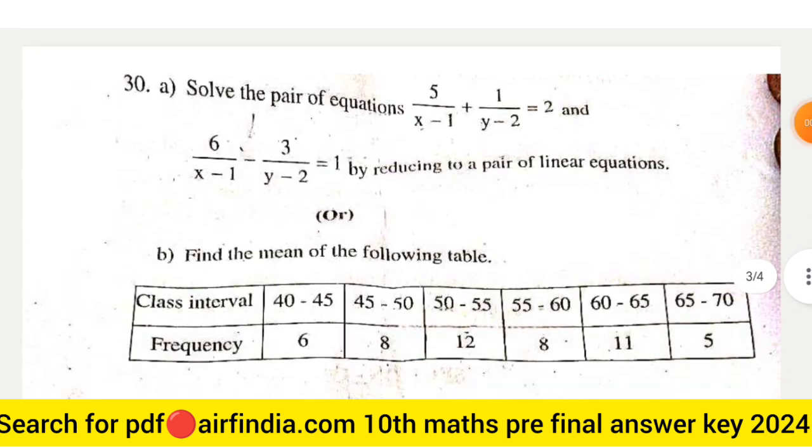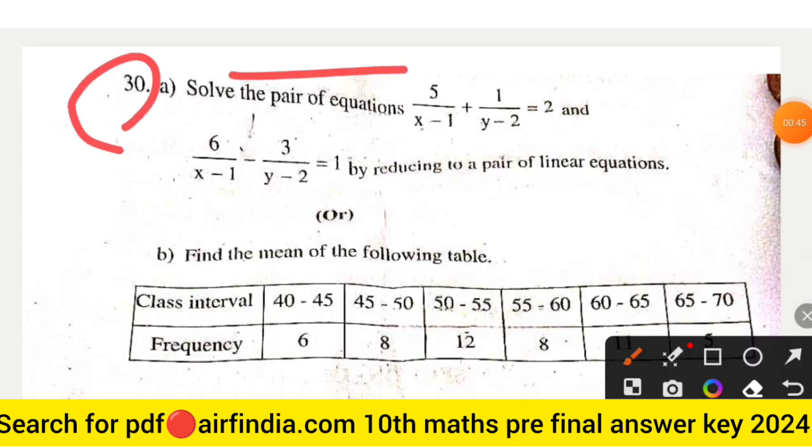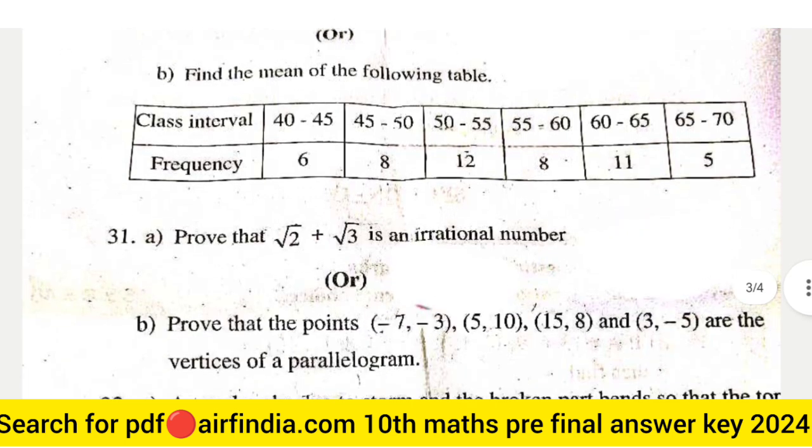This is question number 30: Solve the pair of equations 5/(x-1) + 1/(y-2) = 2 and 6/(x-1) - 3/(y-2) = 1 by reducing to a pair of linear equations. Or, find the mean of the following table with class interval and frequencies shown.